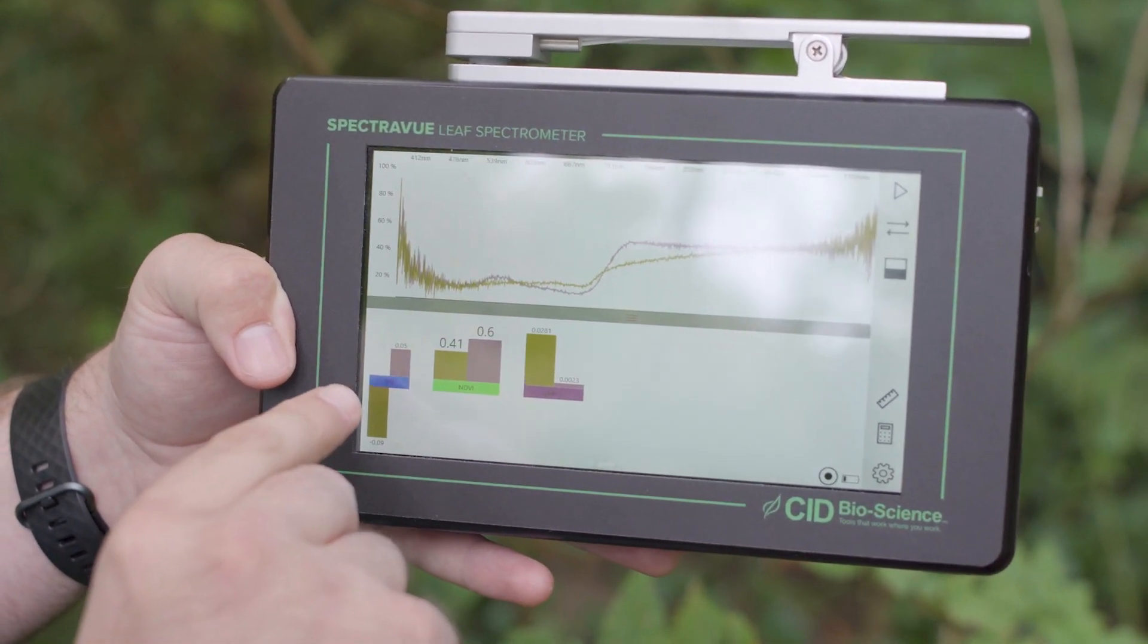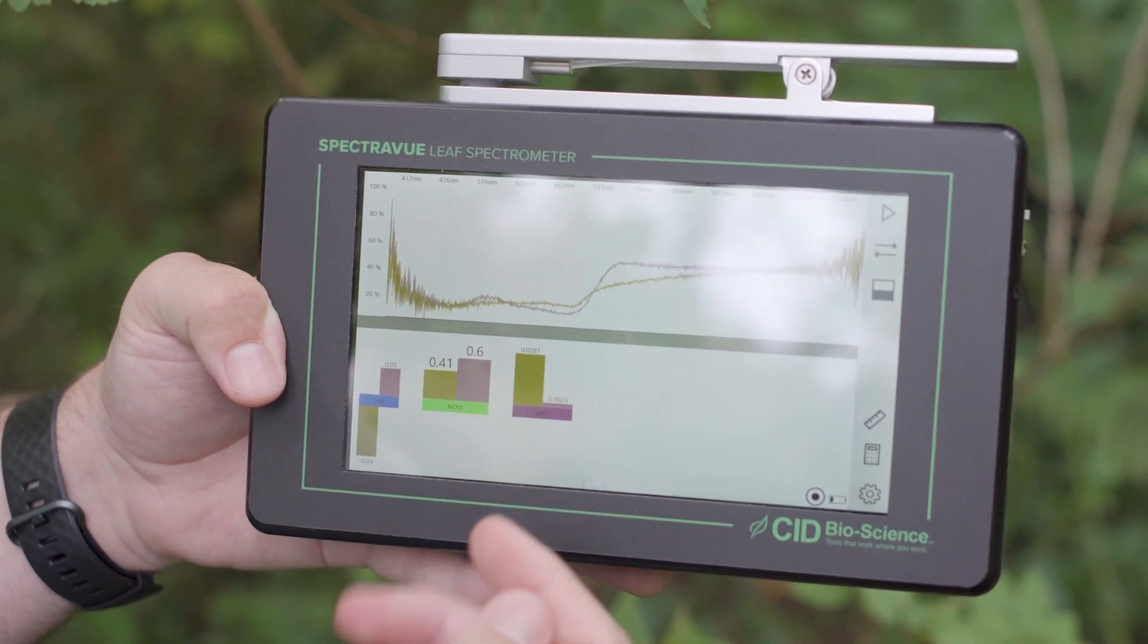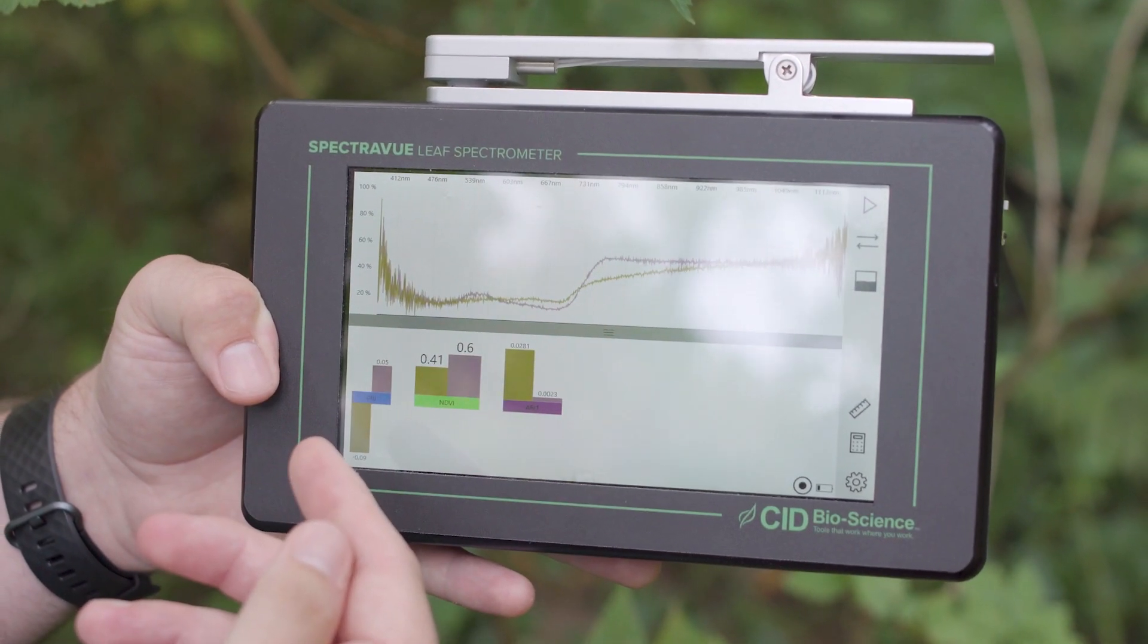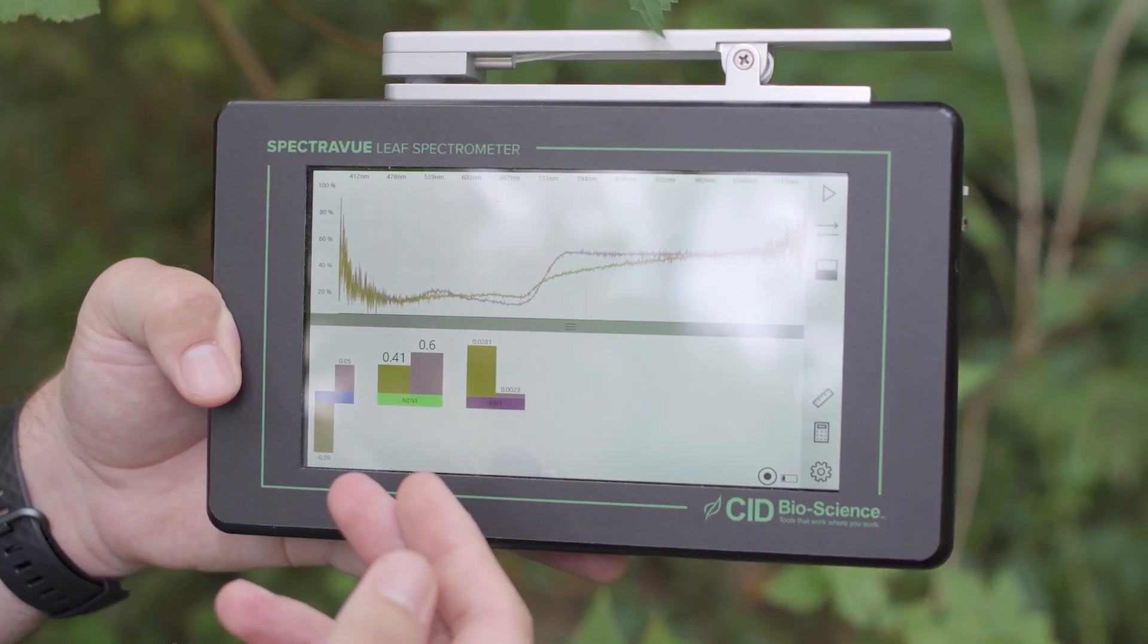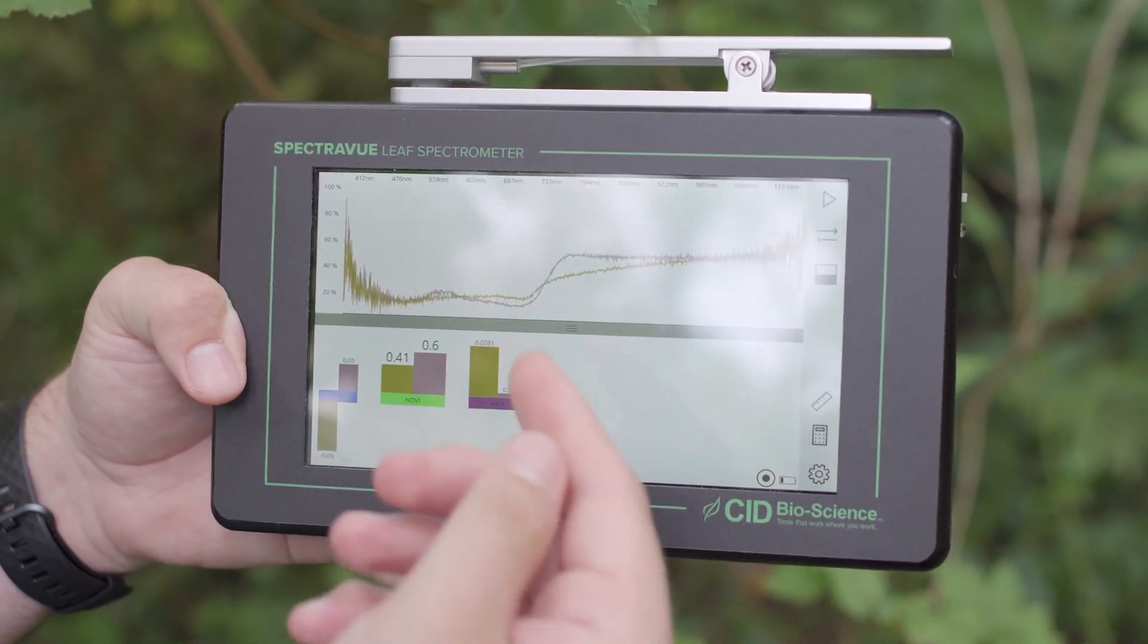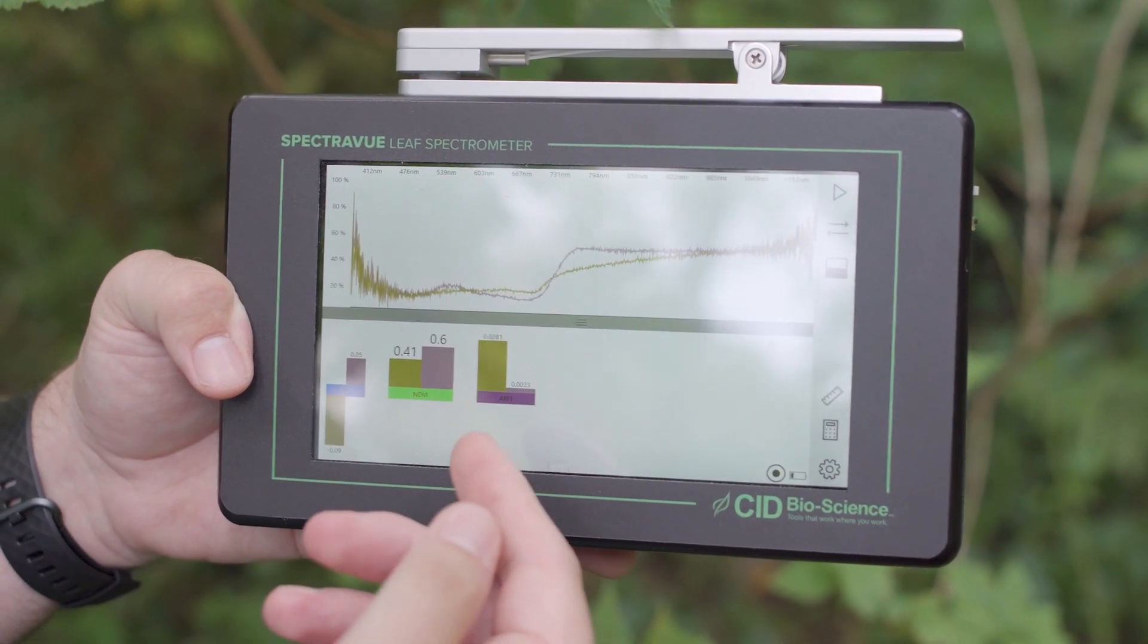So down here I have the PRI, the NDVI, and the AR1. These indicate the PRI is the photochemical reflectance index, the NDVI is the normalized difference vegetation index, and the AR1 is the anthocyanin reflectance index.